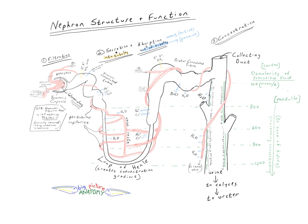The nephron is composed of three basic parts: what's called the glomerulus, which is where filtration happens. We've then got the proximal convoluted tubule connected by the loop of Henle to the distal convoluted tubule, where the processes of secretion of substances into the tubules and absorption out of the tubules happens.